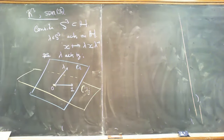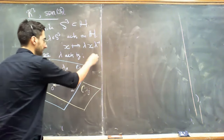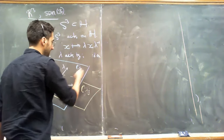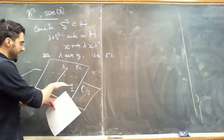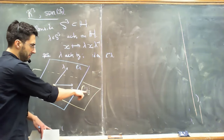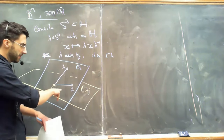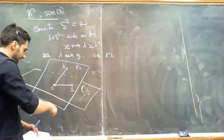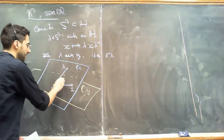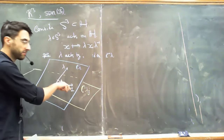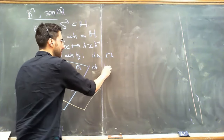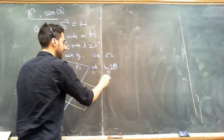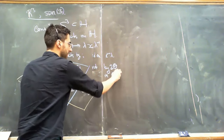How does λ act under this conjugation? Well, it's the identity on the blue plane C_λ, and it is a rotation in the direction from λj to λk — the quaternion k — by an angle twice the angle between 1 and λ. So it's a rotation by 2θ in the C_λj plane.